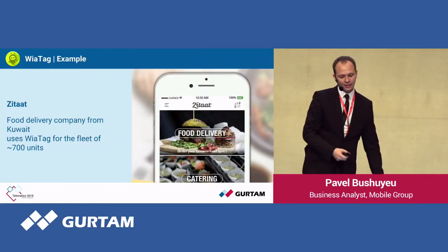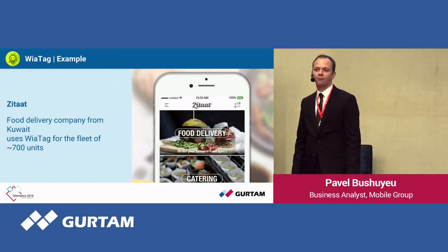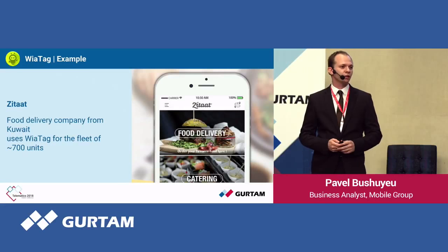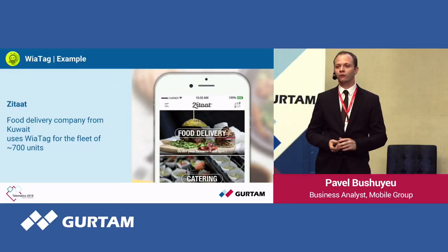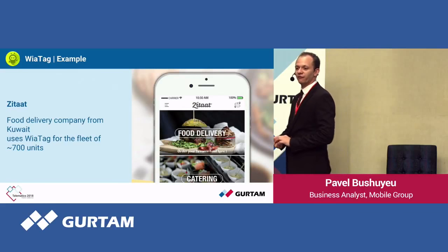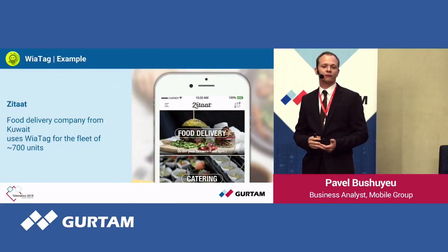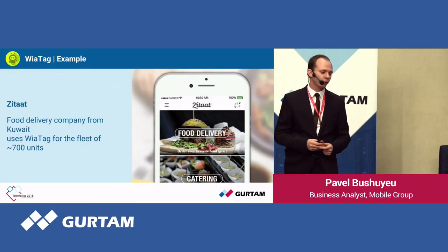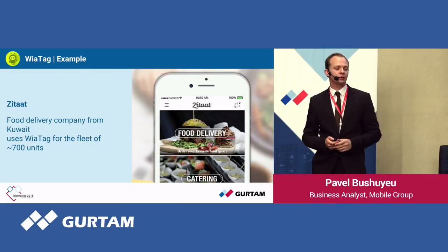My personal favorite example of this use case is Zitat — a project from Kuwait. The company is using about 700 units running all around Kuwait to deliver food. They saw the market opportunity and wanted to test it. They already had the ordering solution in place, and Vitec helped them to test it not only on automobiles and vehicles, but also on scooters and bikes. You will hear about this case a little bit later from my colleague from the Middle East region, who will go into more details.